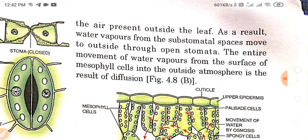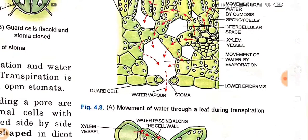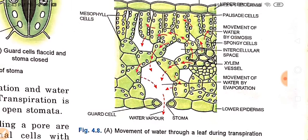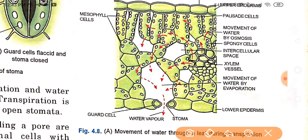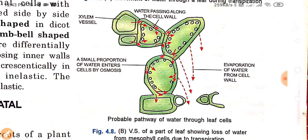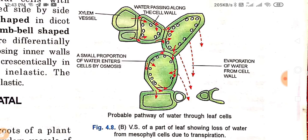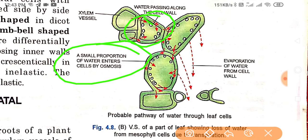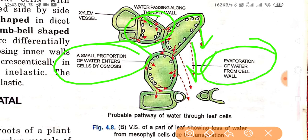The entire movement of water vapors from the surface of mesophyll cells into the outside atmosphere is the result of diffusion. You can see this in the figure — this shows the movement of water through a leaf during transpiration, carried out by xylem. This part of the leaf shows loss of water from mesophyll cells due to transpiration. Xylem vessels are here, water passes along the cells, and a small proportion of water enters cells by osmosis, while evaporation occurs from the cells.